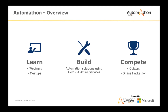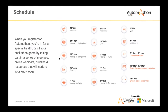This program is designed to upskill your hackathon game through meetups, online webinars, quizzes, and resources provided by Automation Anywhere and Microsoft. The first webinar was on January 23rd — you can find the recorded video on Skillenza. Quiz One is already live, Quiz Two goes live on February 14th, and Quiz Three on March 1st.